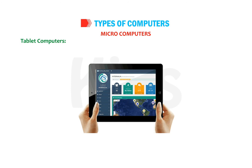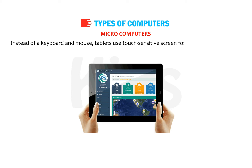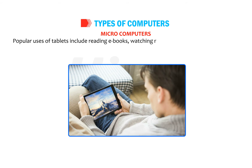Tablet Computers: these computers are smaller and lighter than laptop computers but bigger than smartphones. Instead of a keyboard and a mouse, tablets use a touch-sensitive screen for typing and navigation. Tablets have 7 inch, 8 inch or 10 inch screens. Popular uses of tablets include reading e-books, watching movies, viewing photos, browsing the net, etc.